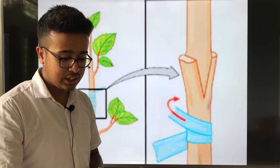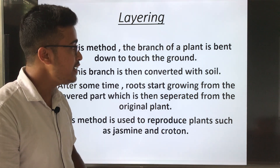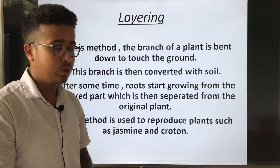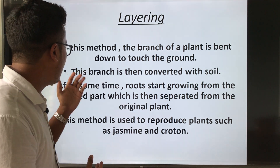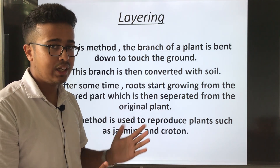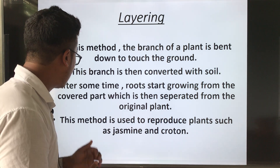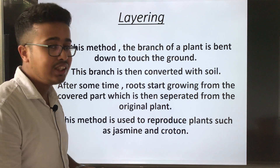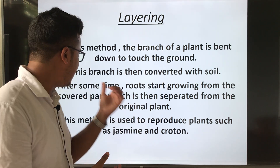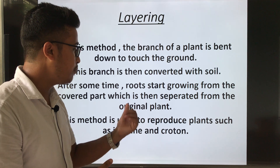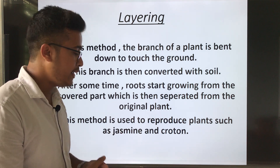After grafting, here is another method which is layering. In this method, the branch of a plant is bent down to touch the ground, and this branch is then covered with soil. After some time, roots start growing from the covered part, which is then separated from the original plant. This method is used to reproduce plants such as jasmine and croton.